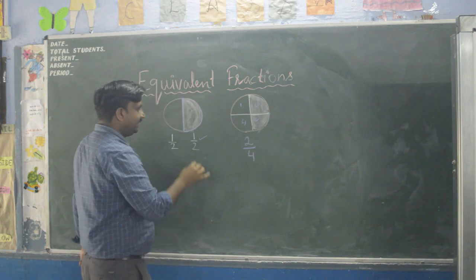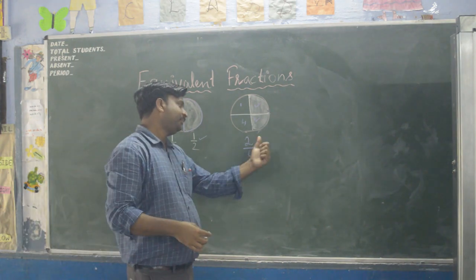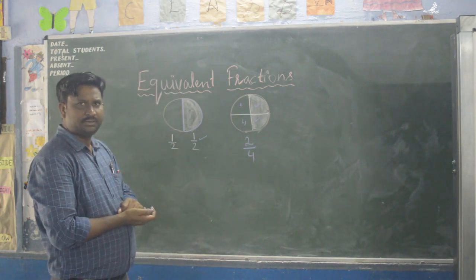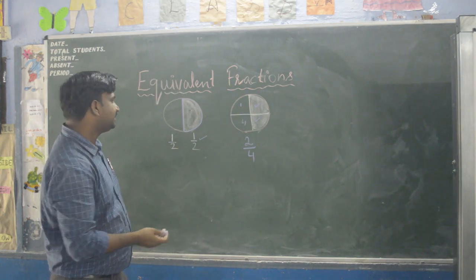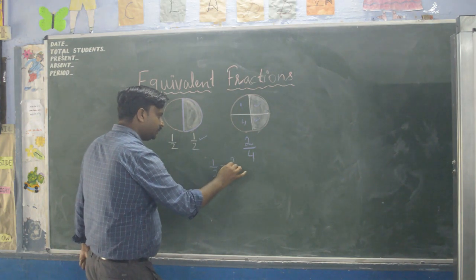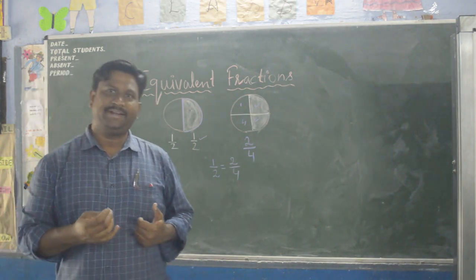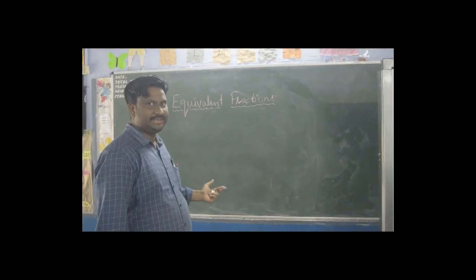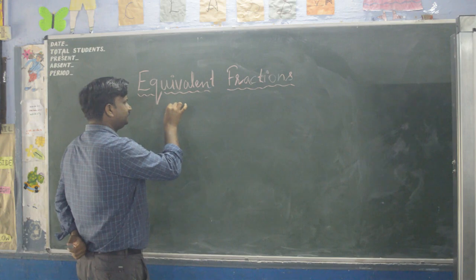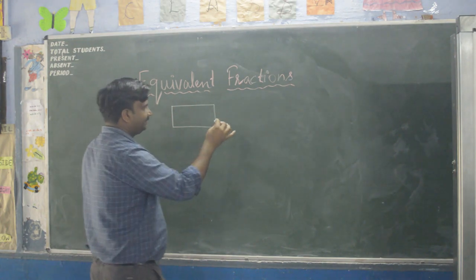We can see that half portion is equivalent to two upon four. In half of the circle I have shaded half, and similarly in two upon four I have shaded half of the circle. So one upon two is equal to two upon four — this is called equivalent fractions. Let's find it with another example using a rectangle.